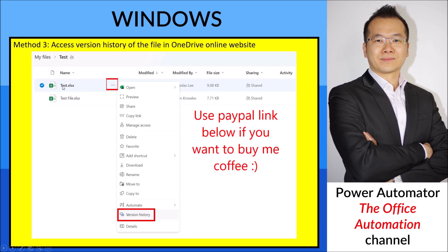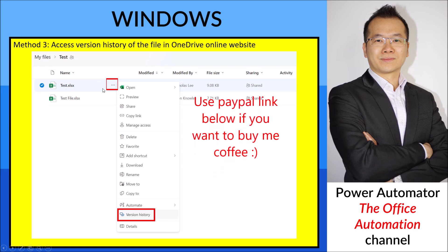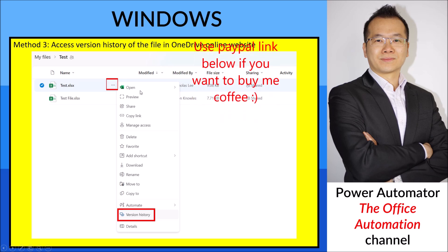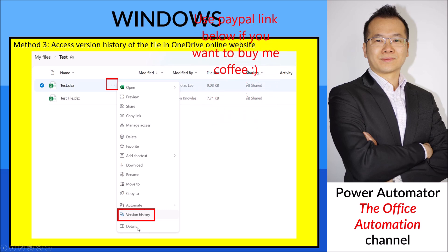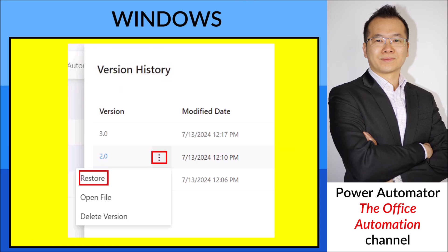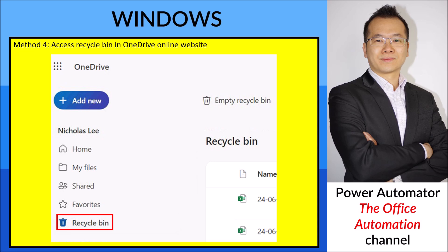The third method is to go to your OneDrive online website, navigate to the folder containing the file, and select the file. Click the triple-dot menu, scroll to the bottom, and find Version History. Click on it, then click the triple dot next to the version you want to restore.